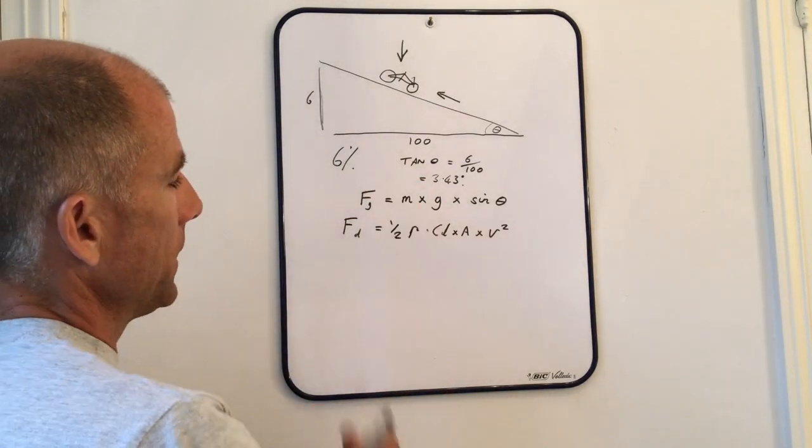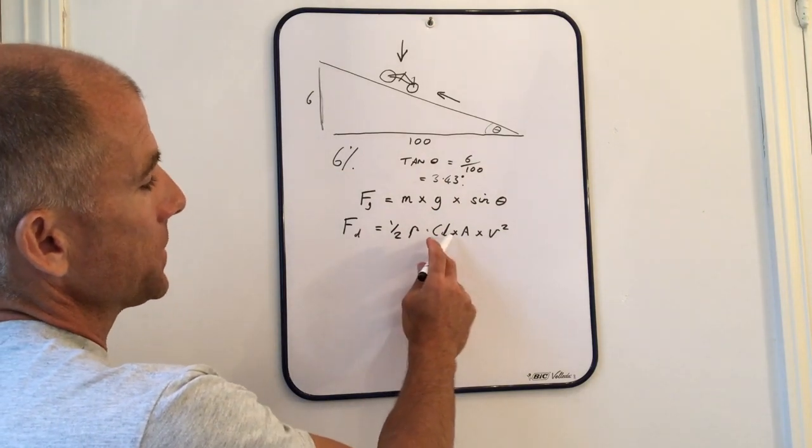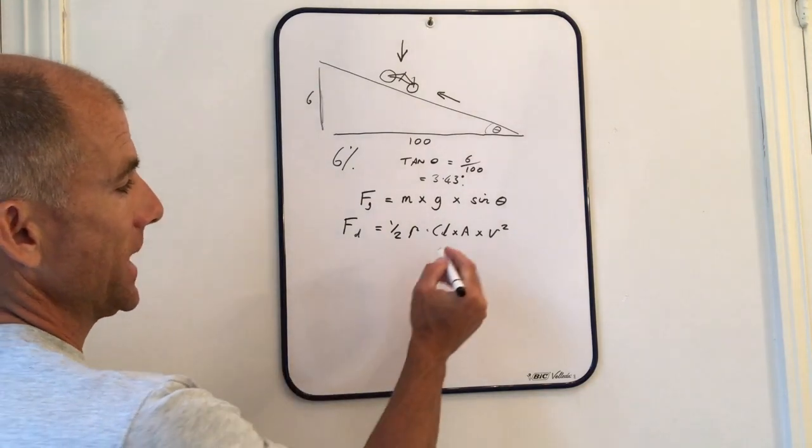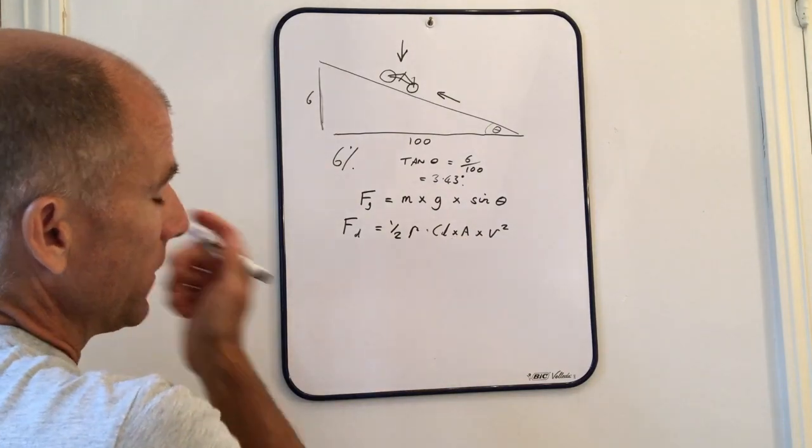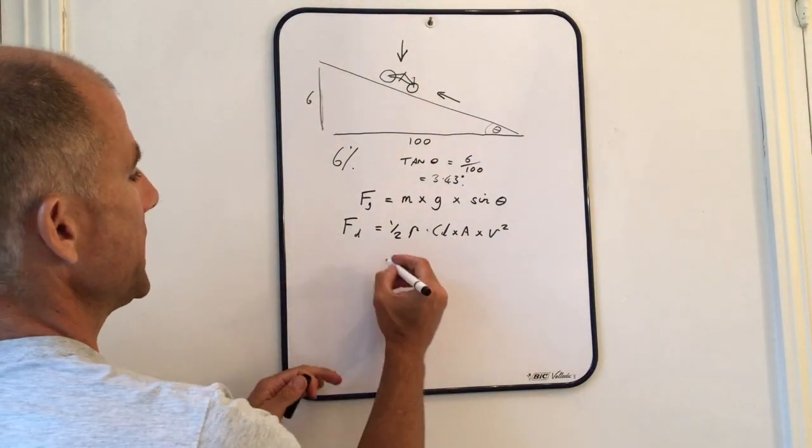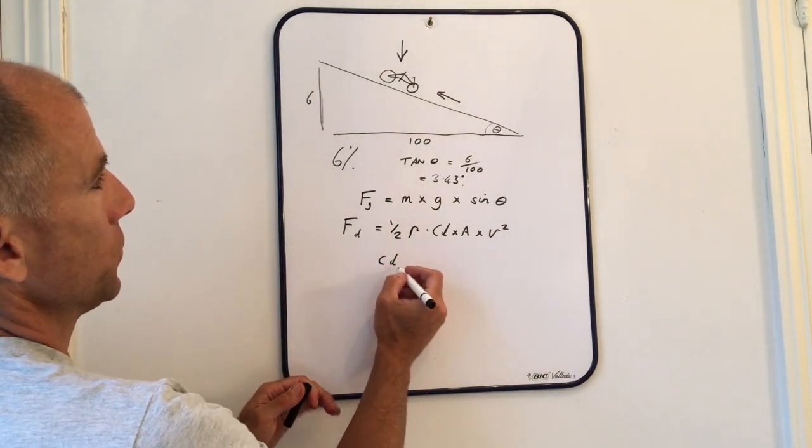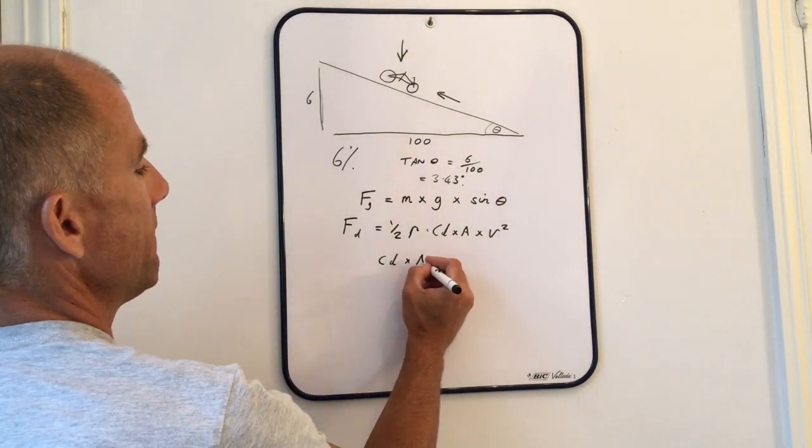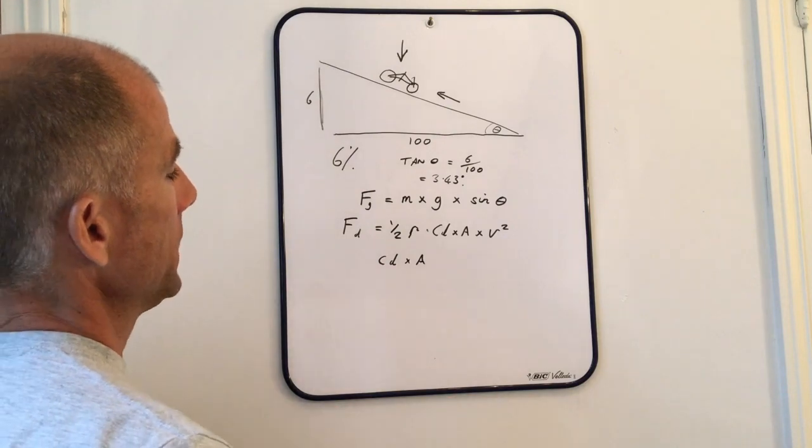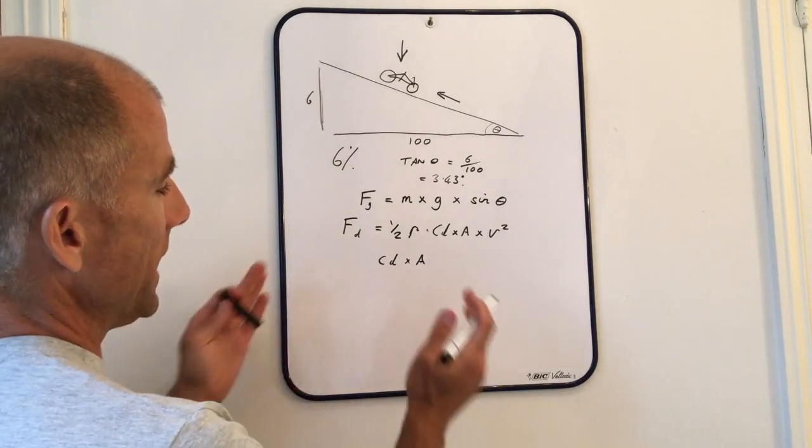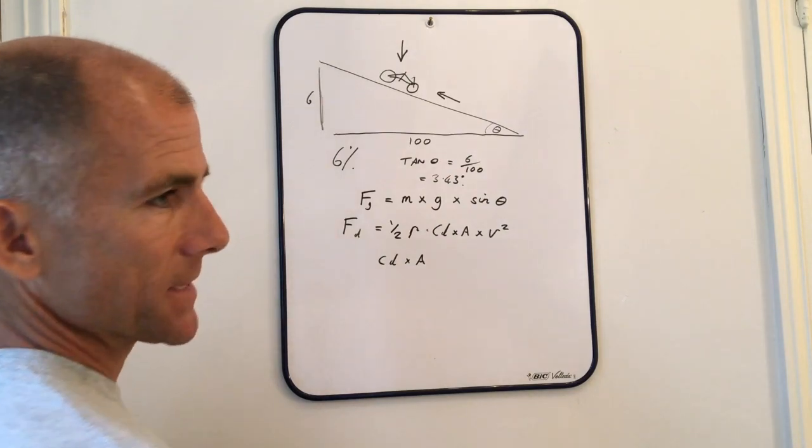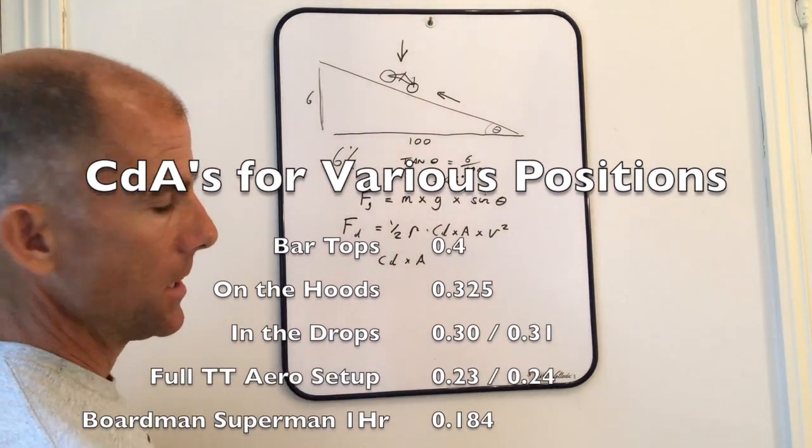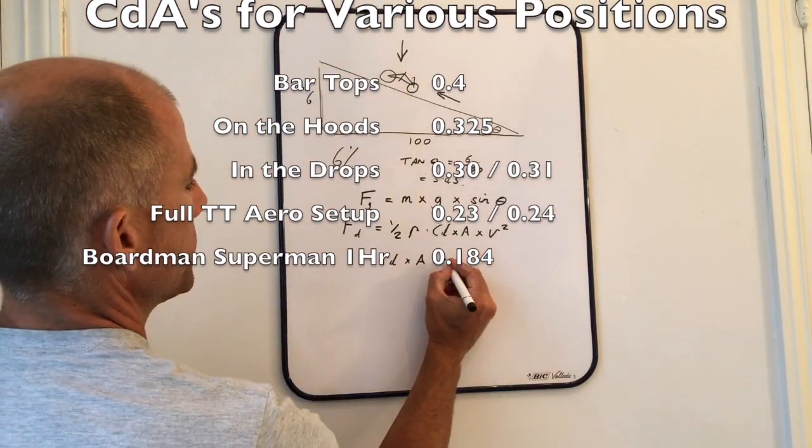We're going to match these up and look at varying some of these values and see at what point it makes sense to change your CDA. If we look at the CDA, this is just your drag coefficient, which is a function of how slippery a shape you have adopted, and this is your surface area that you present to the wind. For simplicity, we'll just combine them as CDA, and various studies have been done.